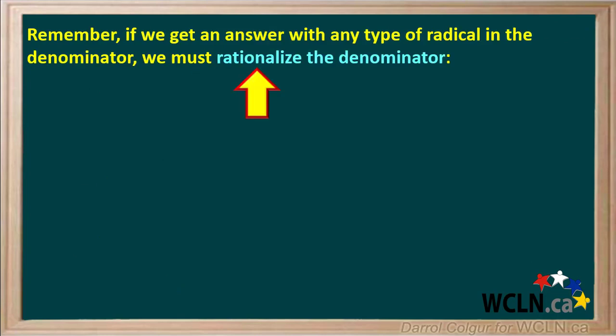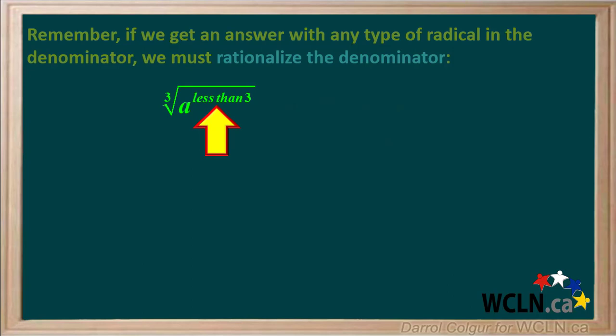Remember, if we get an answer with any type of radical in the denominator, we must rationalize the denominator. Getting rid of a radical is done differently for cube roots and fourth roots than it's done for square roots.